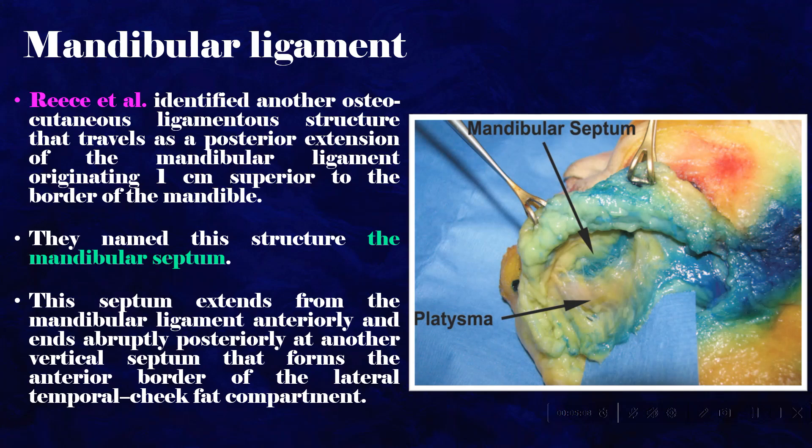This septum extends from the mandibular ligament anteriorly and ends abruptly posteriorly at another vertical septum that forms the anterior border of the lateral temporal cheek fat compartment.